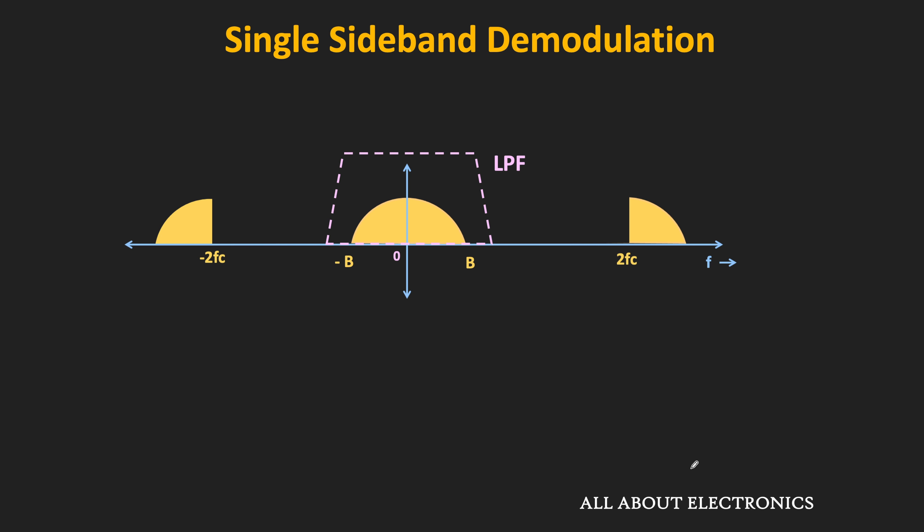So in this video, we understood briefly about single sideband modulation and derived the mathematical expression of the SSB signal. In the next video, with the help of this mathematical expression, we will see how to generate the SSB signal, and we will also look at the special case of tone modulation.